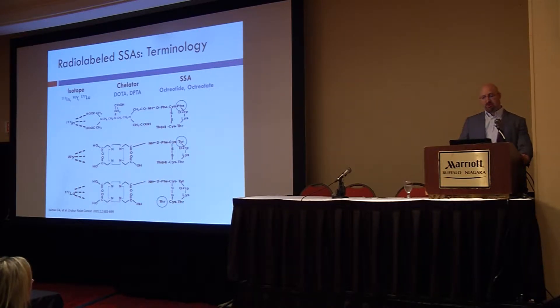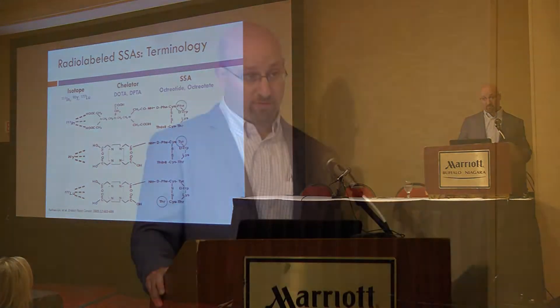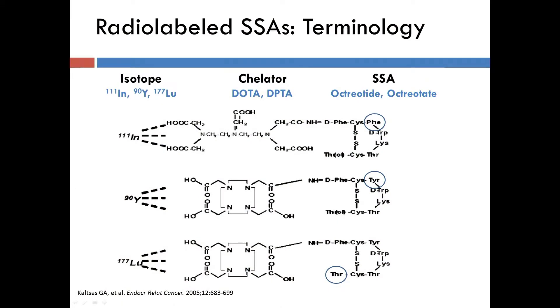Looking back historically, this is a treatment that was developed in the 1990s, primarily in Europe. Even though it was not approved until yesterday in Europe, it was administered by different institutions as in-house preparations. With indium-111, we see very low rates of tumor shrinkage, around 0 to 10%. With yttrium-90, higher rates of tumor shrinkage, and perhaps the highest rates with lutetium-177, roughly 20 to 40%.